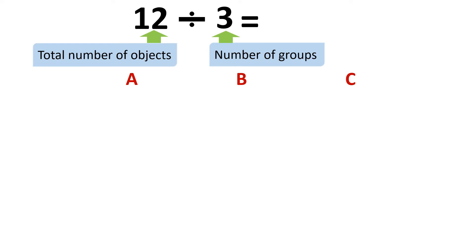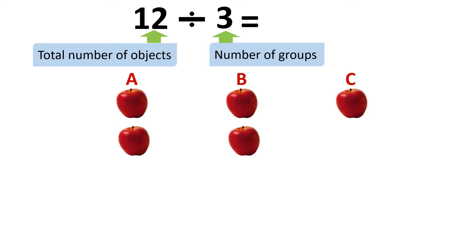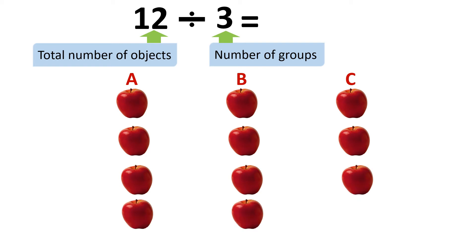I will keep putting my apples into groups A, B, and C until I have divided all 12 apples equally among three groups. One, two, three, four, five, six, seven, eight, nine, ten, eleven, twelve. Can you see how many apples we have in each group? Yes, we have four apples in each group. So 12 divided by 3 equals 4. This is our answer.